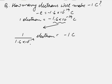This quantity is 6 × 10^18 electrons, so -1 coulomb equals 6 × 10^18 electrons. This many electrons will make -1 coulomb.